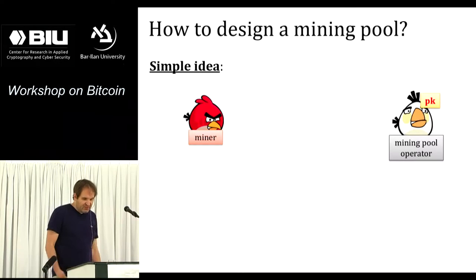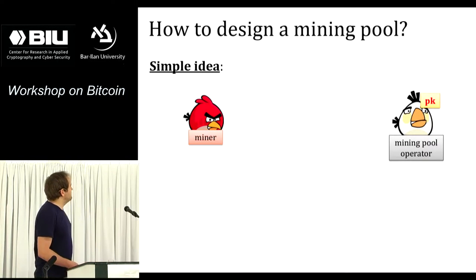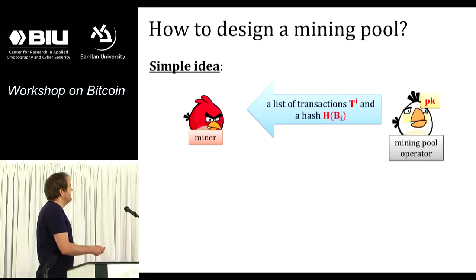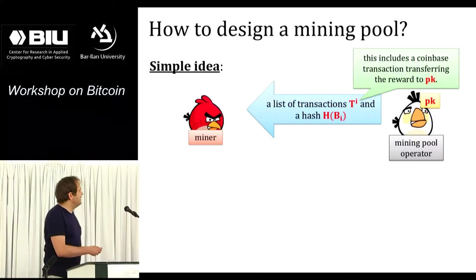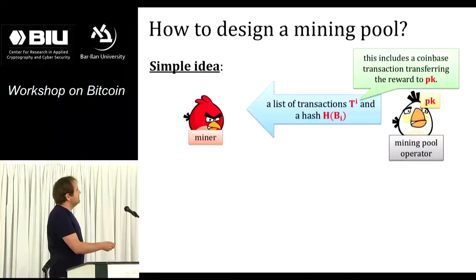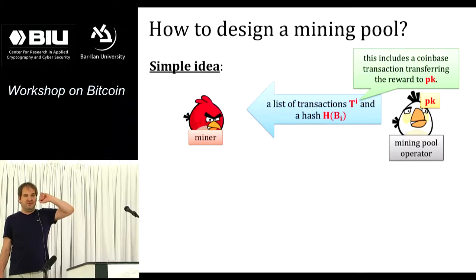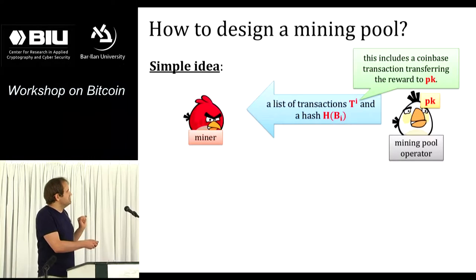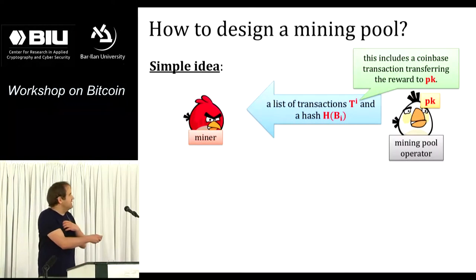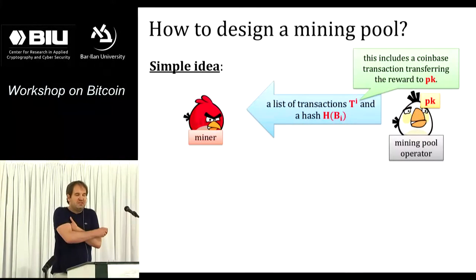How to design a mining pool? A mining pool operator gives an individual miner a list of transactions TI and the hash of the last block. These transactions include the coinbase transaction that transfers the reward to the mining pool operator. The miner has to mine on this - there are three components: the transaction list, the hash, and the nonce. The miner has to find the nonce; the rest he gets from the mining pool operator, including the first transaction specifying that money goes to the mining pool operator.